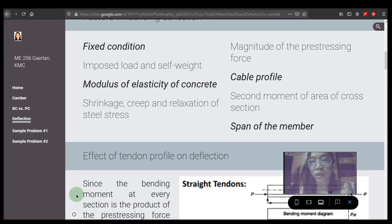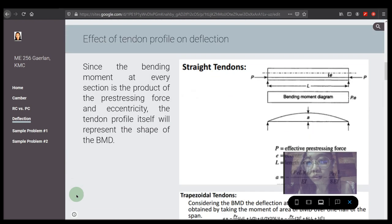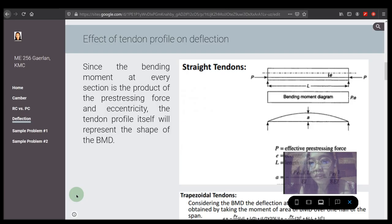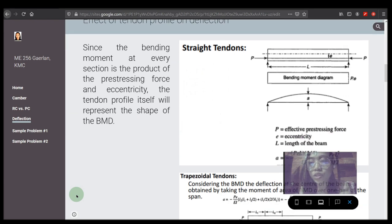Effect of tendon profile on the section. Pre-tensioned concrete is cast around already tensioned tendons. This method produces a good bond between the tendon and concrete which both protects the tendon from corrosion and allows for direct transfer of tension. Since the bending moment at every section is the product of the prestressing force and eccentricity, the tendon profile itself will represent the shape of the bending moment diagram.